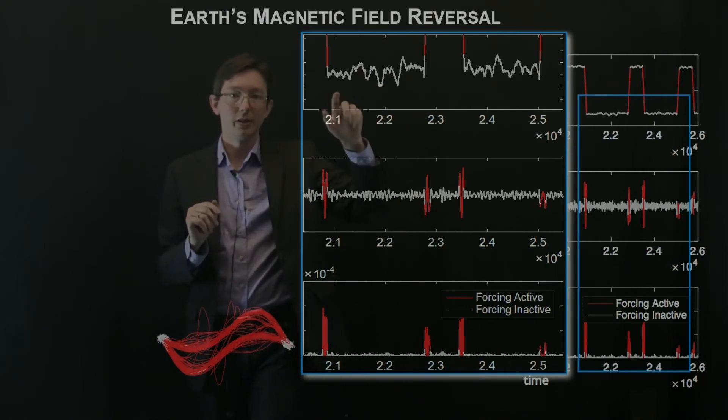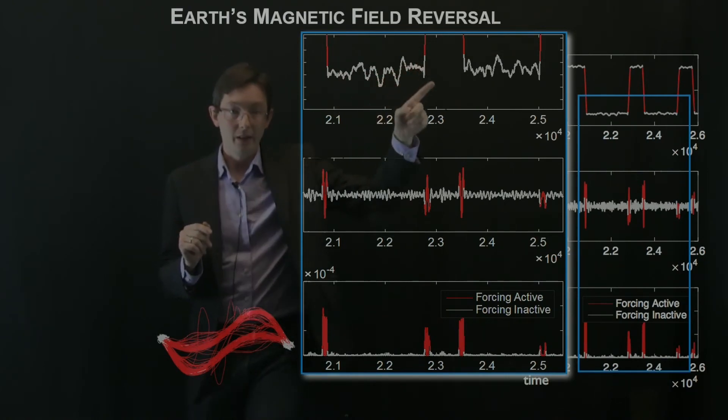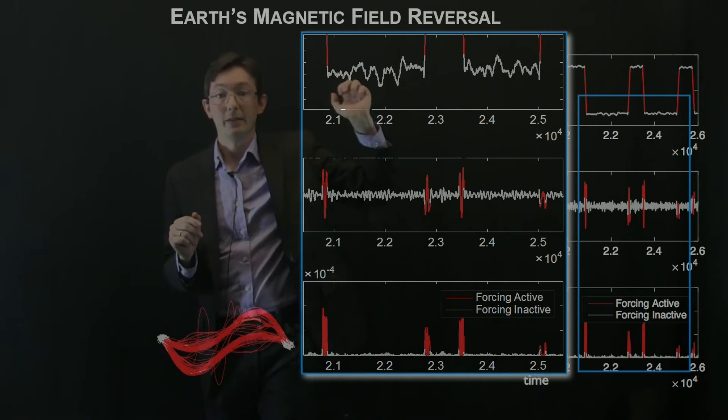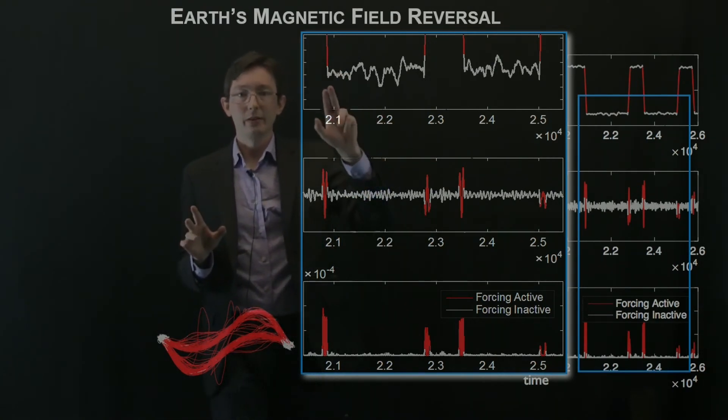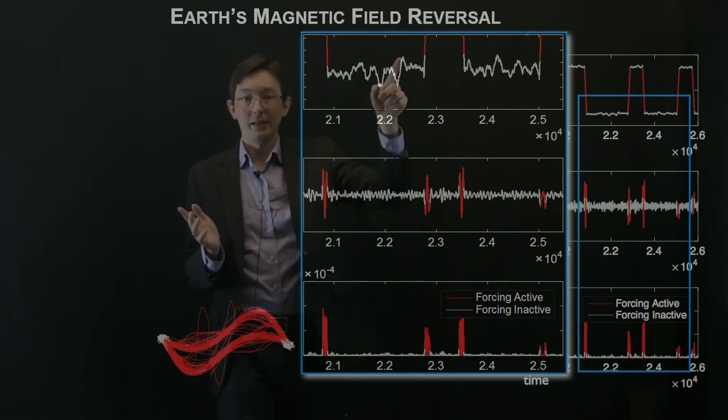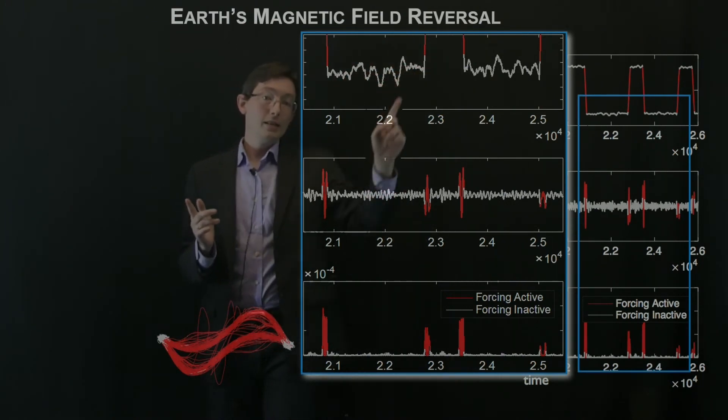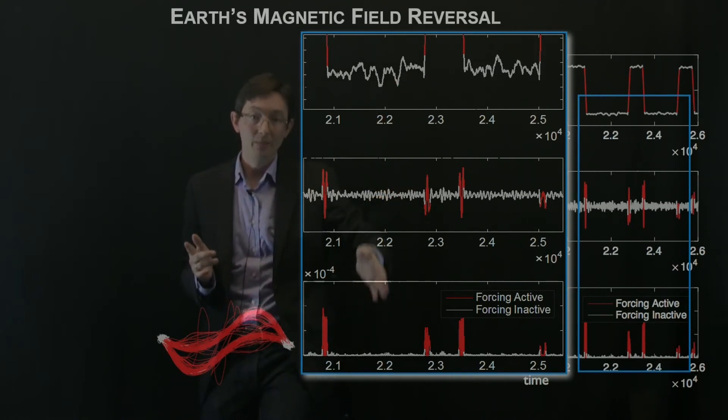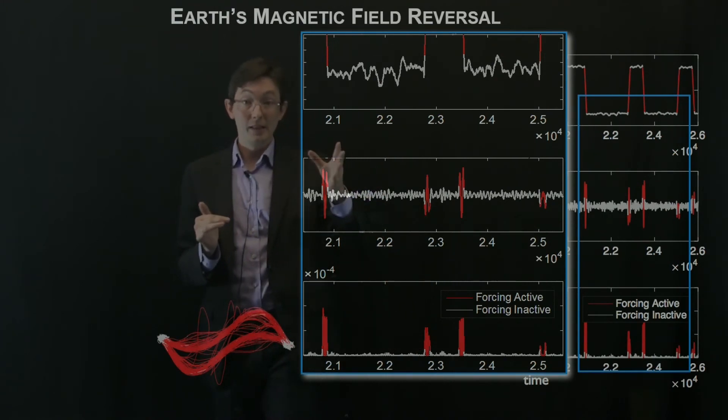So this is zooming into a couple of these field switching events. And you see that it's just doing its normal fluctuations. And then here, it's about to jump, the field's about to flip. And what's interesting is I would challenge you if you didn't have this color coded, and you didn't know, if you were just measuring this in time, you might not know when it's about to flip. You might say it's going to flip here, or you might not know it's going to flip here, this is within the expected kind of variance of this signal.